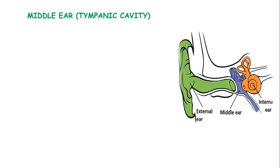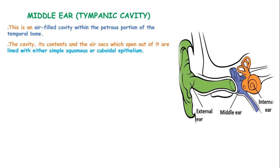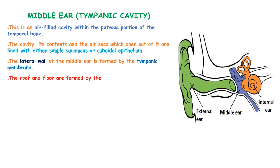The middle ear or tympanic cavity is an air-filled cavity within the petrous portion of the temporal bone. The cavity, its contents, and the air sacs which open out of it are lined with flat squamous epithelium. The lateral wall of the middle ear is formed by the tympanic membrane, therefore known as the tympanic wall. The roof and the floor are formed by the temporal bones.